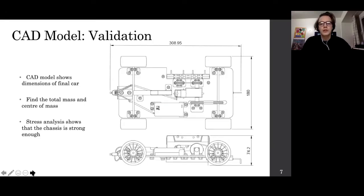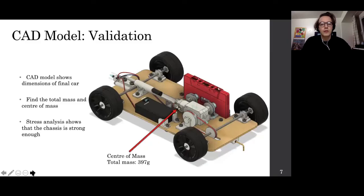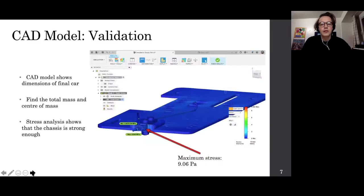The CAD model allows us to validate certain features of our design, including the total size the final car will be, the total mass and the center of mass of the vehicle, and also finite element analysis allowed us to test if the car's chassis could survive the impact with the wall.